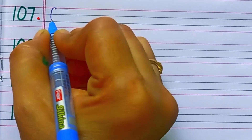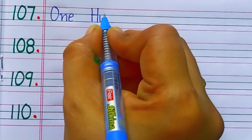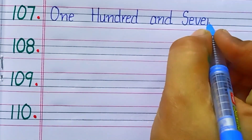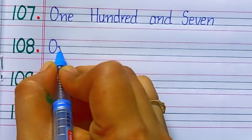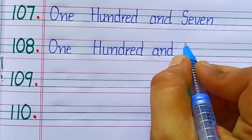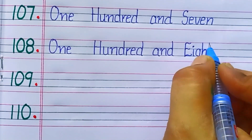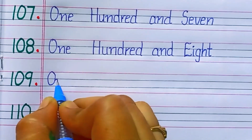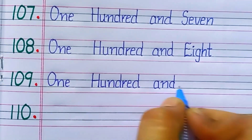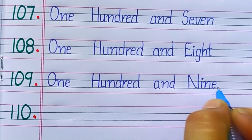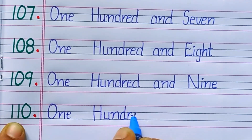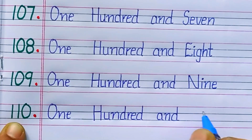107 — S-E-V-E-N-7. 108 — E-I-G-H-T-8. 109, 100 and 9 — N-I-N-E-9. 110, 100 and 10 — T-E-N-10.